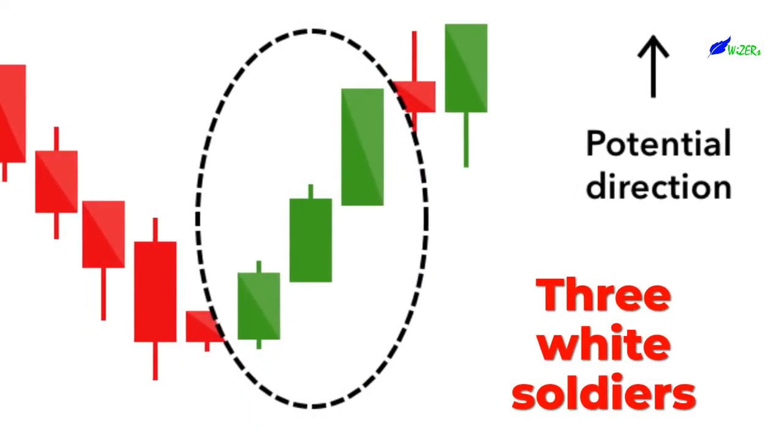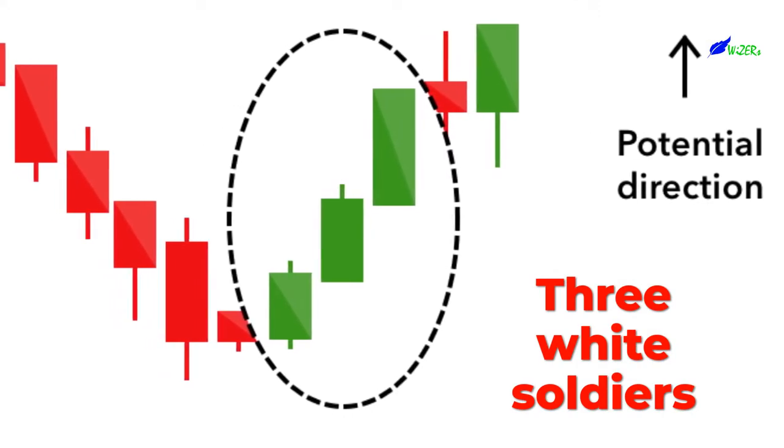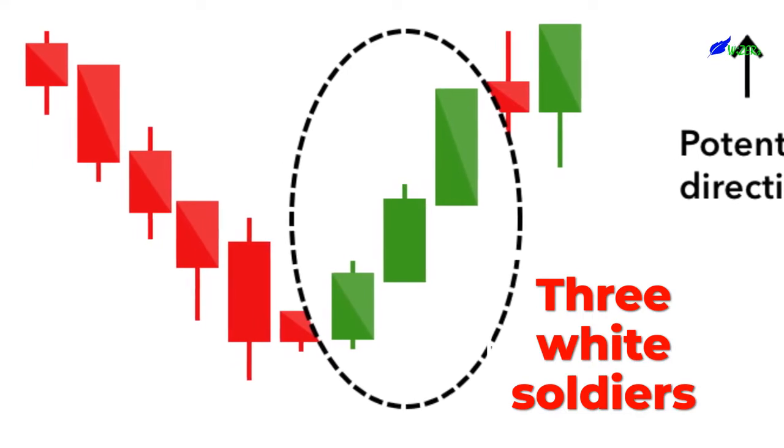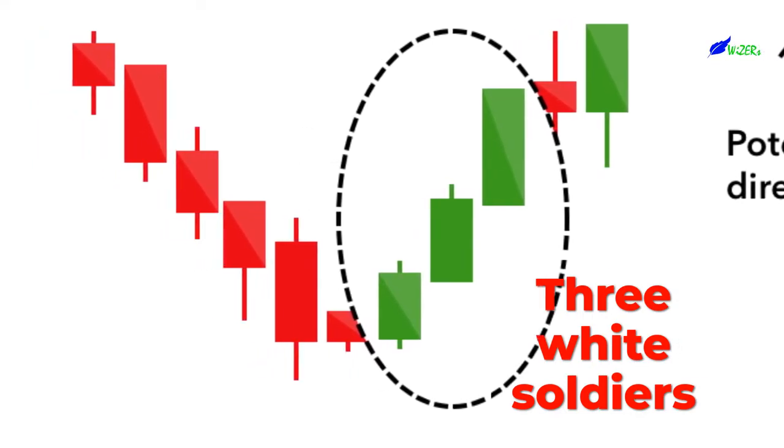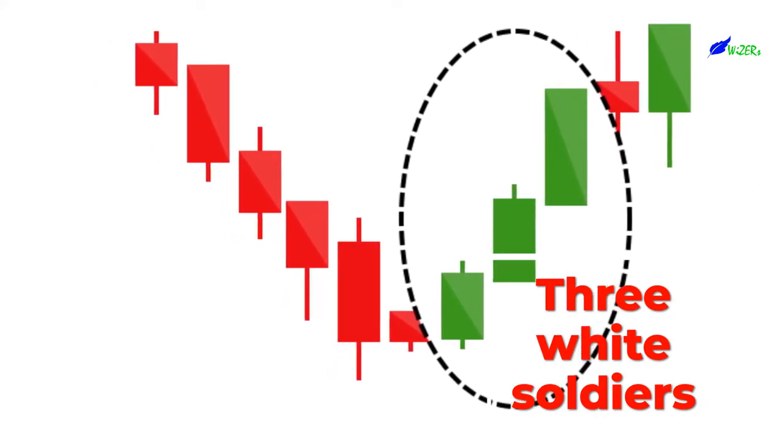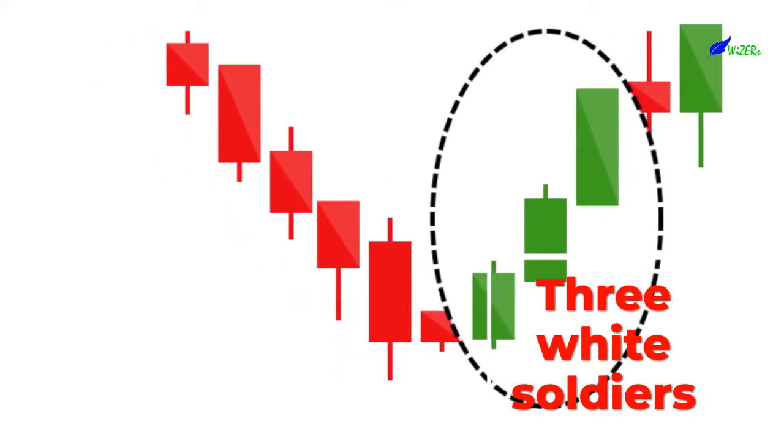Three White Soldiers. The Three White Soldiers pattern occurs over three days. It consists of consecutive long green candles with small wicks, which open and close progressively higher than the previous day. It is a very strong bullish signal that occurs after a downtrend, and shows a steady advance of buying pressure.